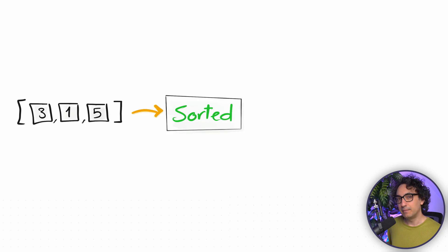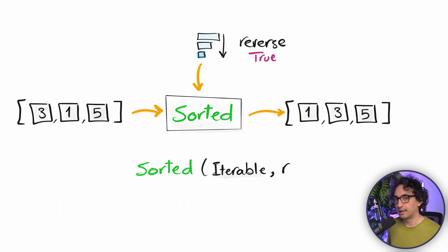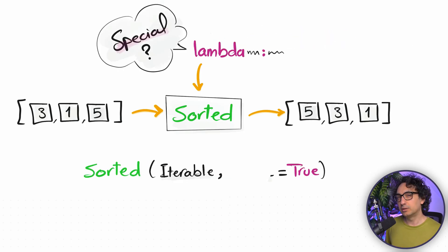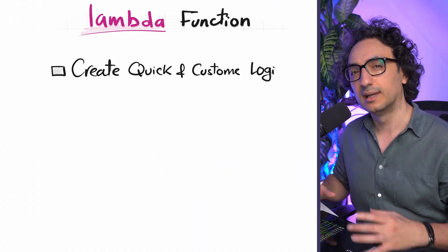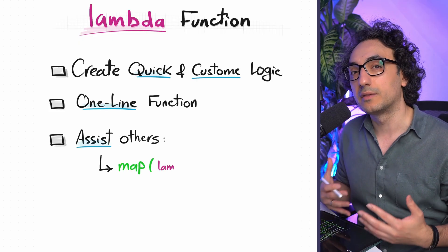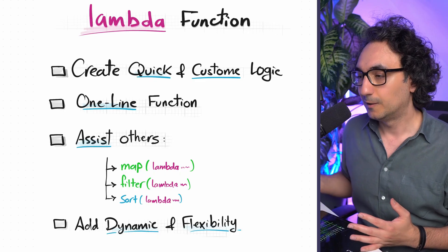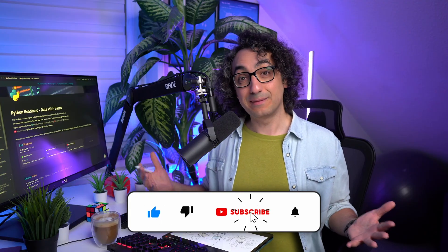Another application for Lambda is the sort method to sort your list. By default it sorts lowest to highest, or with reverse=True, highest to lowest. But you can also define a custom way to order your list using Lambda. That's all about Lambda — it's an amazing technique to create custom logic in a very short and easy way. It works great together with map, filter, and sort, opening the door for a lot of flexibility in defining your logic. If you like this video, support the channel by subscribing, liking, and commenting. Thank you for watching and I'll see you in the next video.